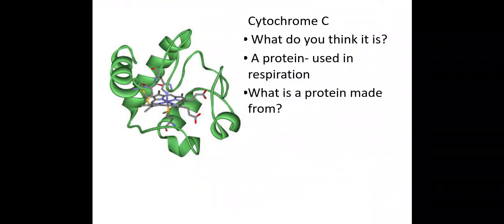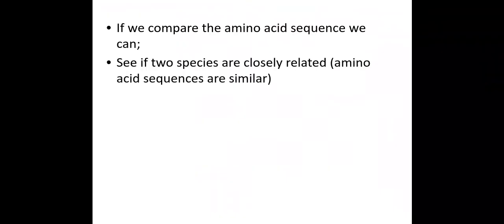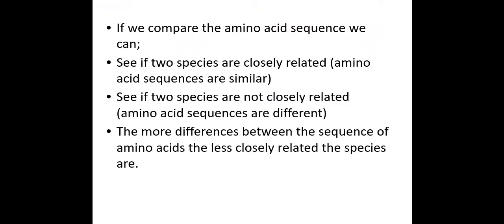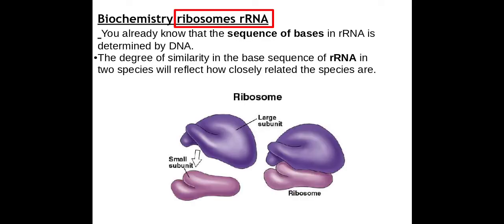Here's a bit more on cytochrome c and the amino acid sequences. It allows you to see the more differences between the sequence of amino acids, the less closely related the species are. We can also look at ribosomal rRNA, though this isn't as popular on the mark scheme.